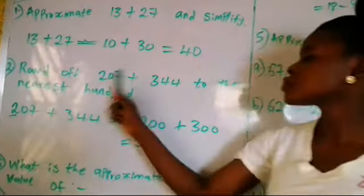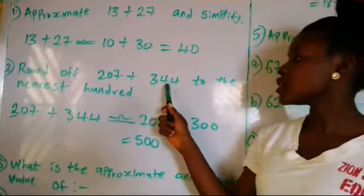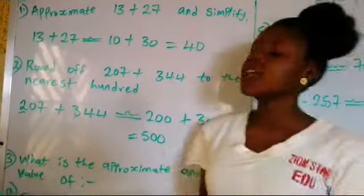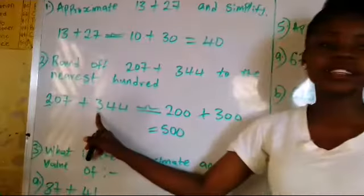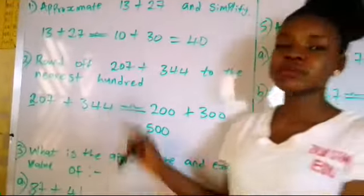Then the next question, we have round off 207 plus 344 to the nearest 100. In our place value, 2 is in the place of 100 and 3 is in the place of 100. So approximate to the 100.